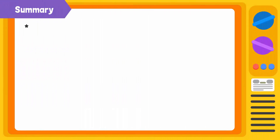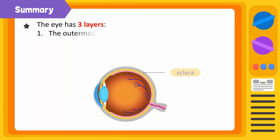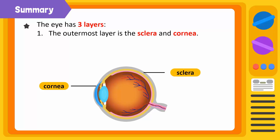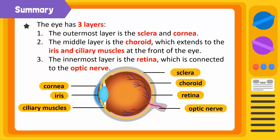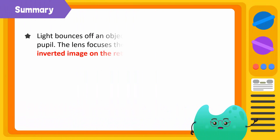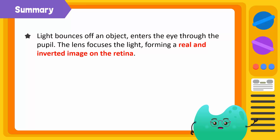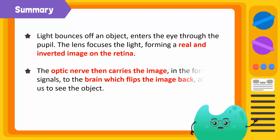Today we learned that the eye has three layers. The outermost layer is the sclera and cornea. The middle layer is the choroid, which extends to the iris and ciliary muscles at the front of the eye. The innermost layer is the retina, which is connected to the optic nerve. Light bounces off an object and enters the eye through the pupil. The lens focuses the light, forming a real and inverted image on the retina. The optic nerve then carries the image in the form of signals to the brain, which flips the image back, allowing us to see the object.